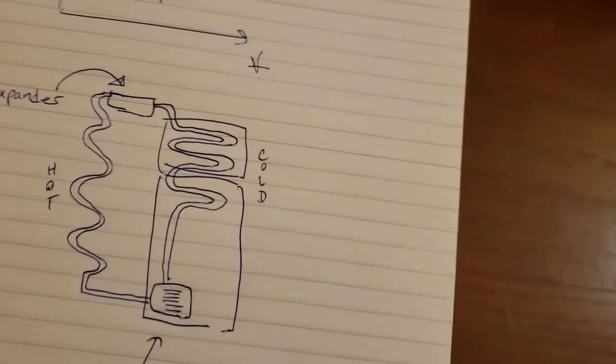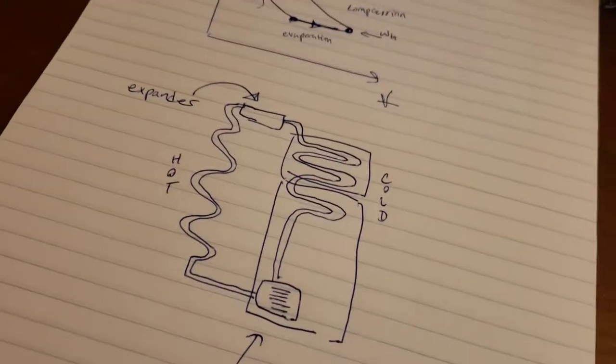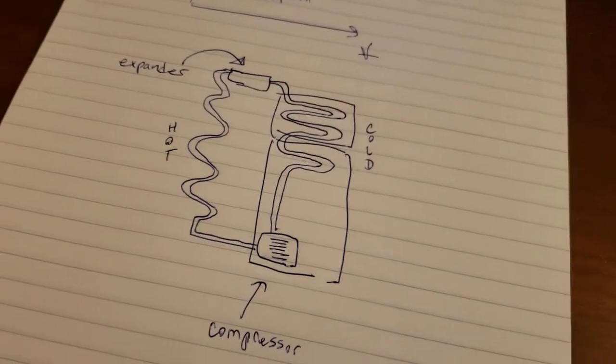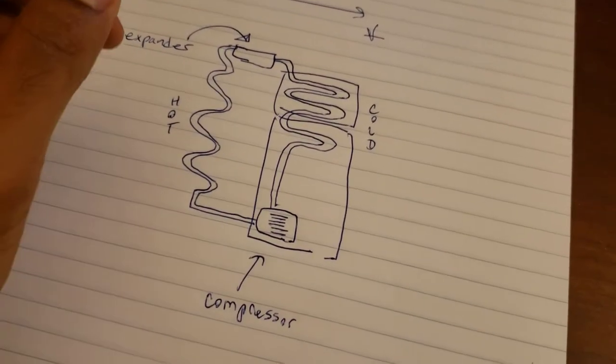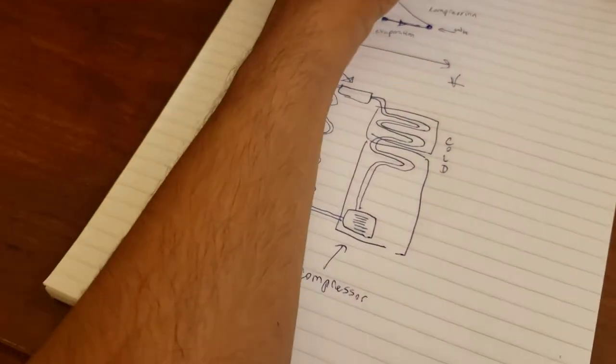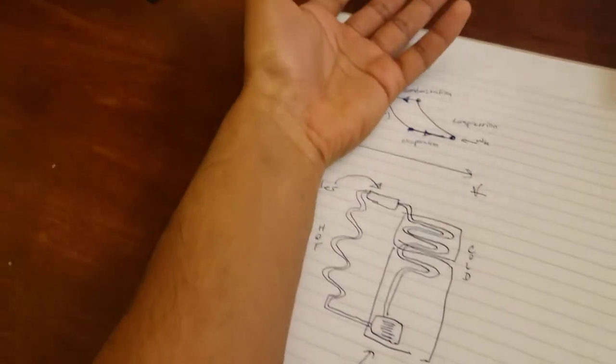So as for the way that the refrigerator actually does this, the easiest explanation I have found on the internet was not actually using the example of a fridge specifically, but think of if you were to put water on your wrist.